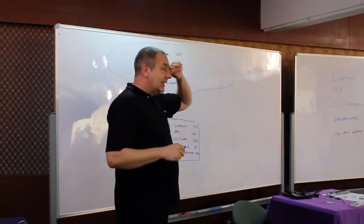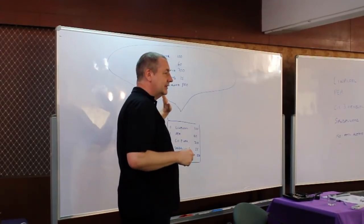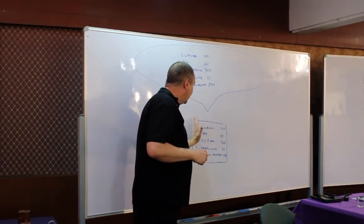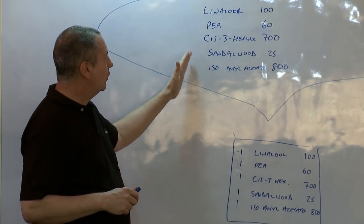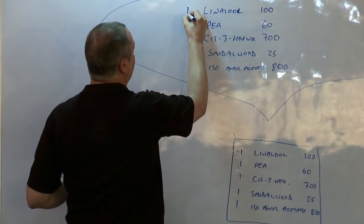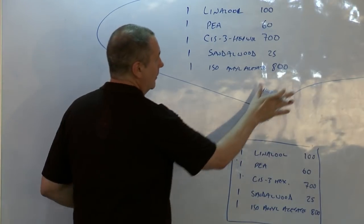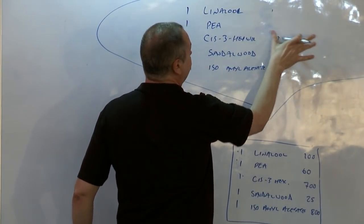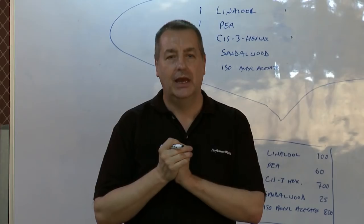So let's say I wanted to make this perfume so that the headspace was evenly distributed, so there was one, one and one in the headspace instead of this ratio. How would I do it? This is my target. I want to make 20% linalol in the headspace, 20% sandalwood, 20% PEA, 20% cis-3-hexanol, so that I have a nicer smell. How would I do it? What do I need to do?